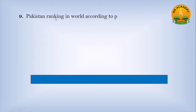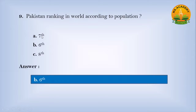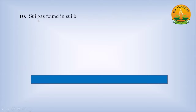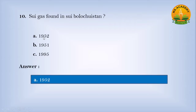Pakistan's ranking in the world according to population: option A seventh, option B sixth, option C eighth — answer is B, sixth. Sui gas was found in Sui, Balochistan: option A 1952, option B 1951, option C 1955 — answer is B, 1951.